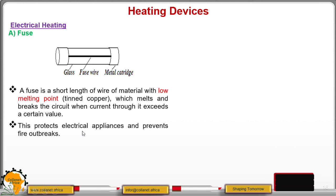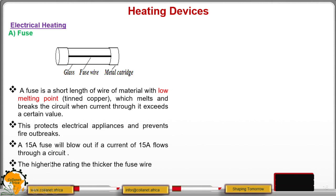Now, this protects the electrical appliances and prevents fire outbreaks. For example, a 15 amperes fuse will blow out if a current of 15 amperes flows through the circuit. And this now will prevent the device from being destroyed. Because again, when you have a very high current, we found that it can produce a very high heating effect.